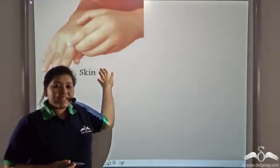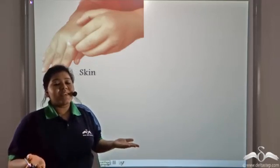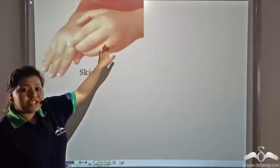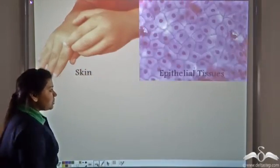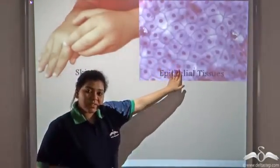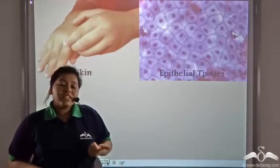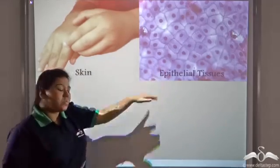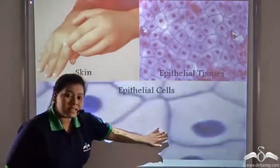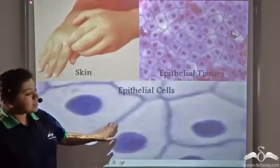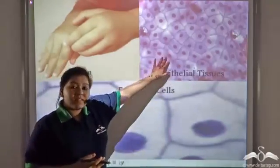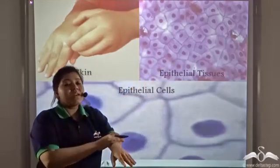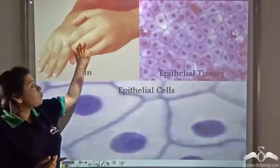The skin is a continuous layer or sheath of cells. The tissue that forms the skin is known as the epithelial tissue. Tissue is an accumulation of cells, so epithelial tissue is an accumulation of epithelial cells. These epithelial cells accumulate to form the epithelial tissue, which forms a continuous sheath on the topmost layer of our body to form the skin.